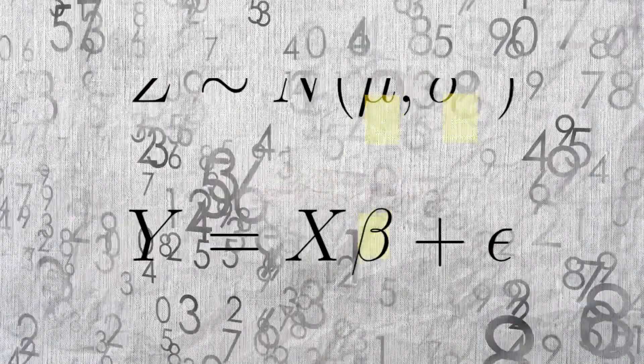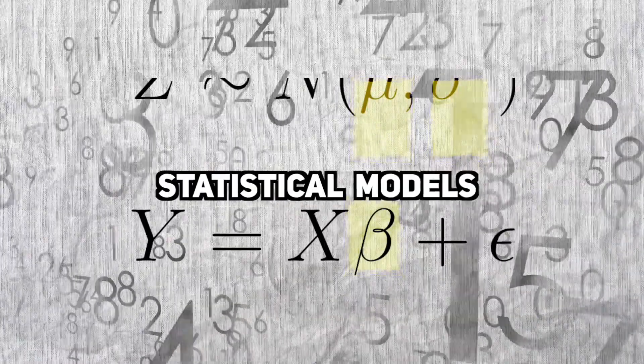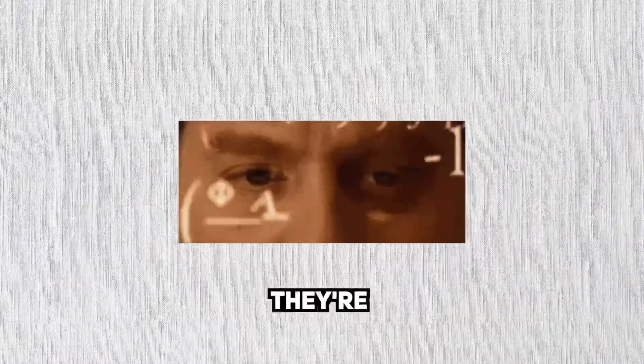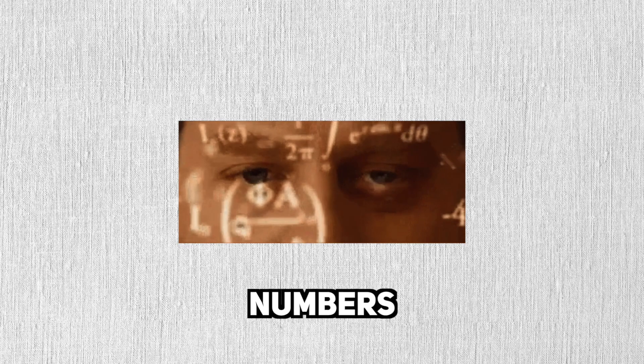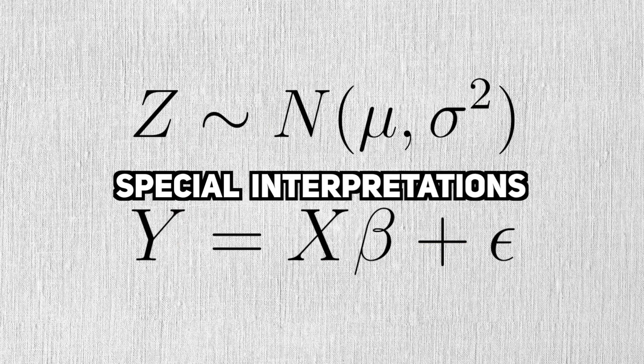Parameters are numbers that appear in statistical models. They're not just numbers — they're numbers with special interpretations.